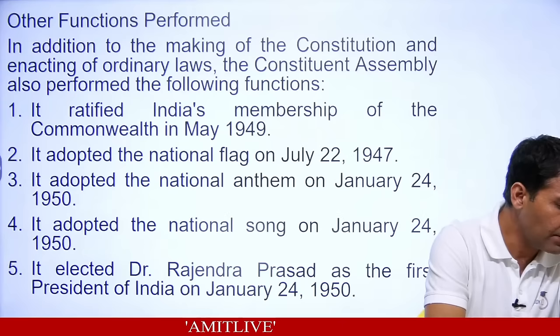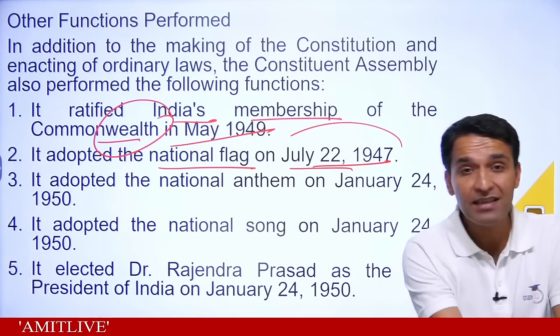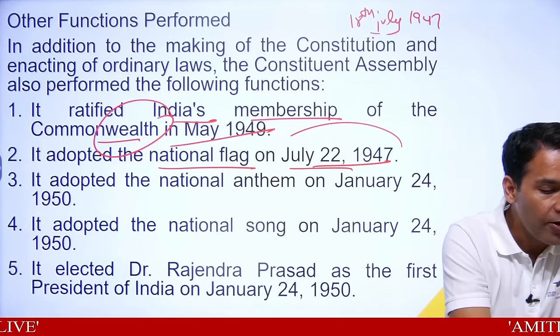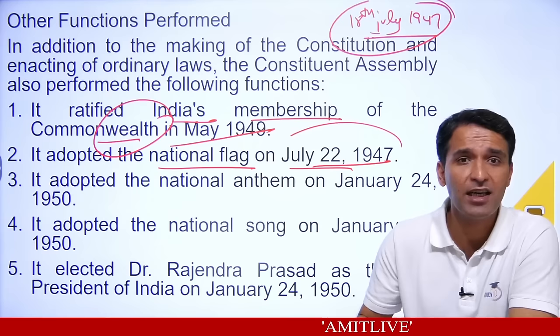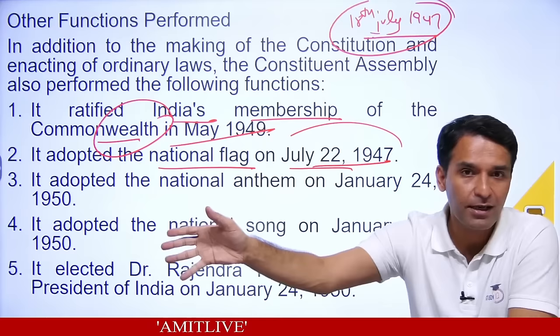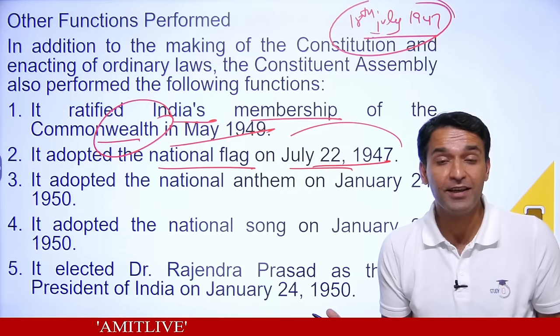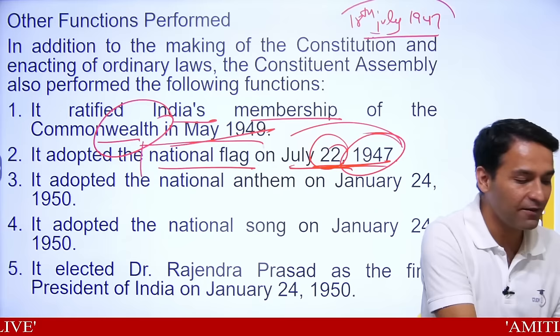The National Flag was adopted on July 22, 1947. Look at the date — the Indian Independence Act was passed on 18th July 1947, so on that day we knew 15th August would be our Independence Day. The moment we knew our date of freedom, the first thought was: what would be our flag? So they met on July 22nd, 1947 and adopted the National Flag.